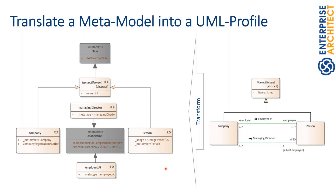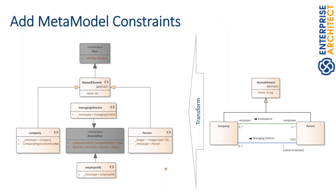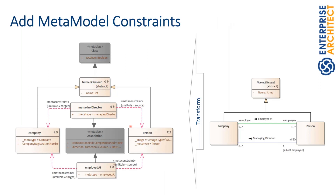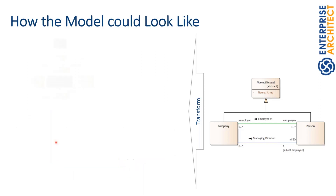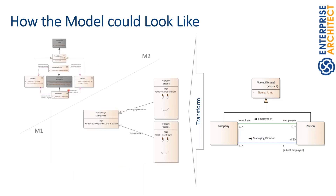In order to have more constraints, we can use metamodel constraints in Enterprise Architect. These metamodel constraints are actually a UML profile by themselves — a UML dependency with a stereotype MetaConstraint and an additional text value called UML Role. Because this is a meta-constraint for associations or links in general, we can use the MetaConstraint source and target to say that the ManagingDirector association can start from Person and end at Company.